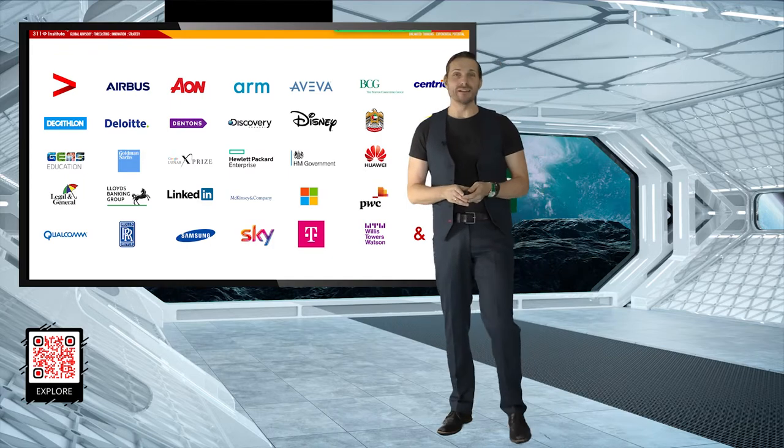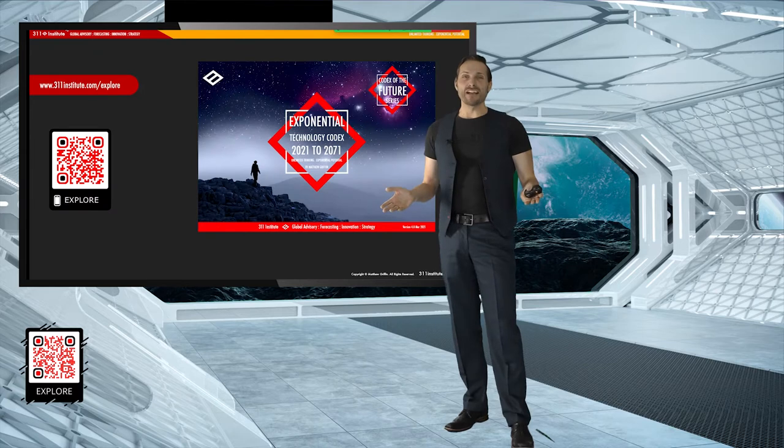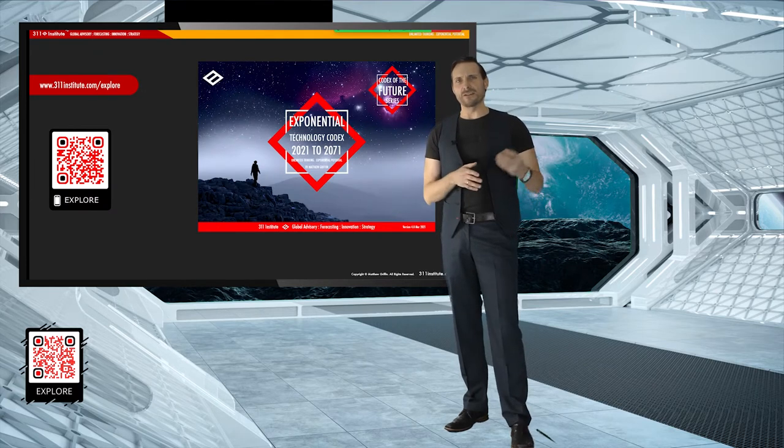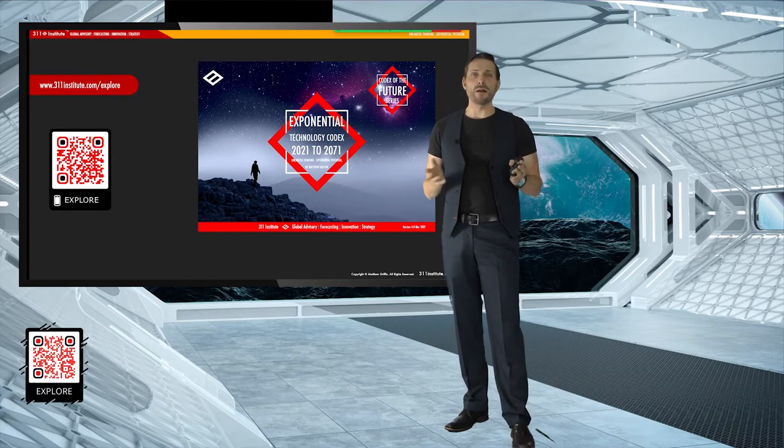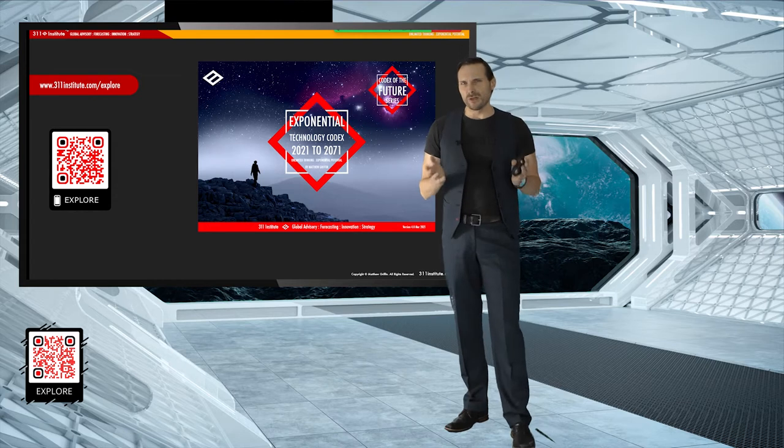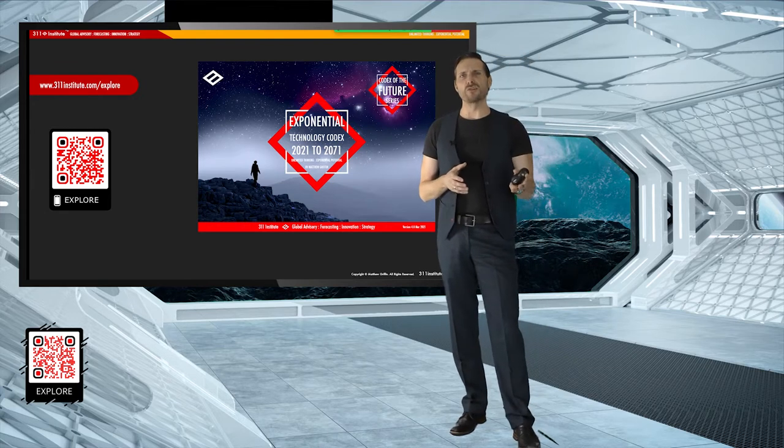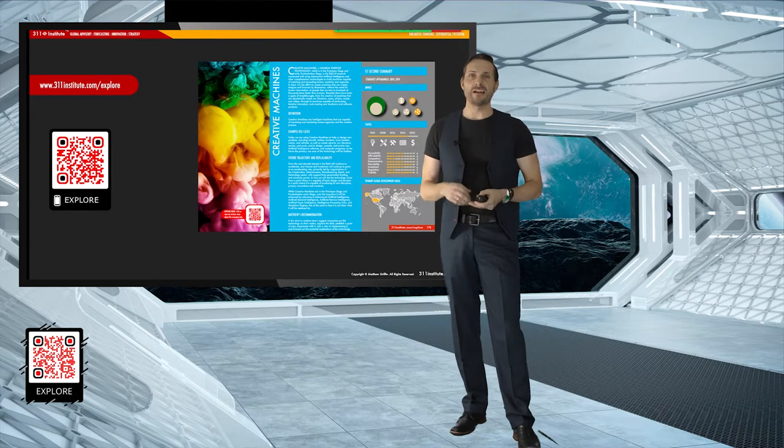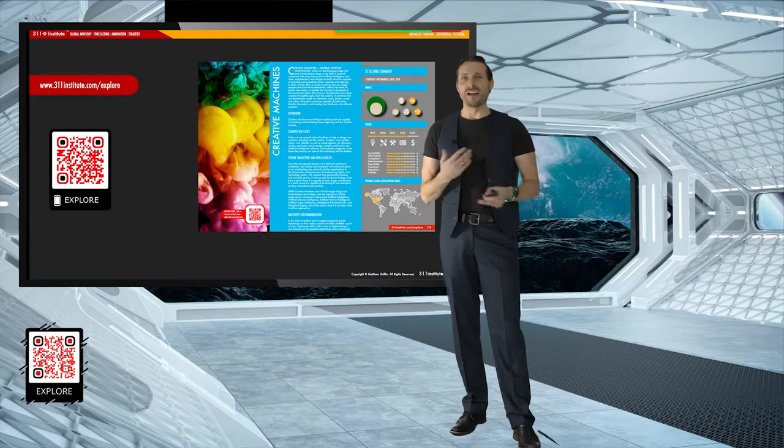With no more further ado, and my ego quite nicely satisfied, if you want to download any of the things that I'm talking about today, I'll give Neil a coupon code. You can go to the www.311institute.com website. If you want to have a look at any of the emerging technologies that I discussed during this presentation, you can download this free codex. It's got about 250 exponential technologies listed in it, including what they are, why they are, why you should care, their state of readiness, the impact that they'll have on the world, as well as sort of general society at large, as well as industries.